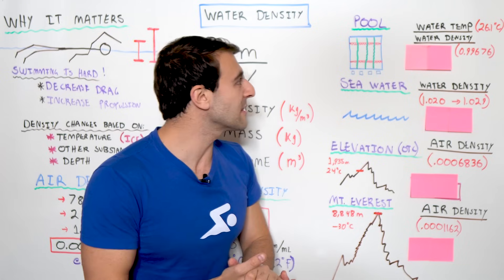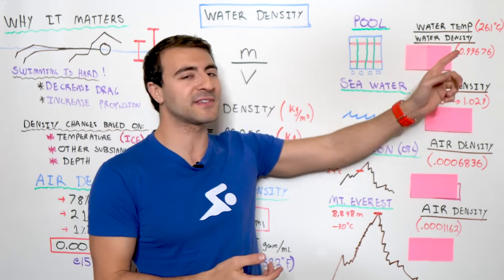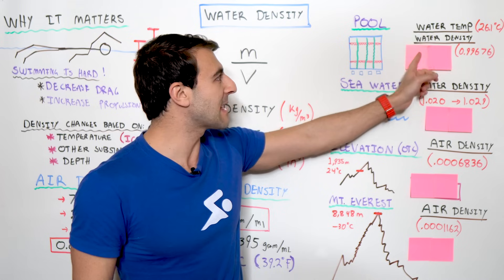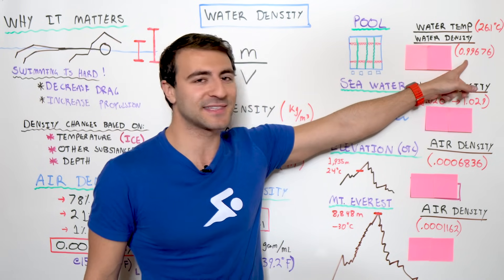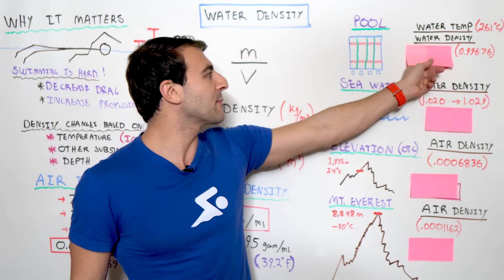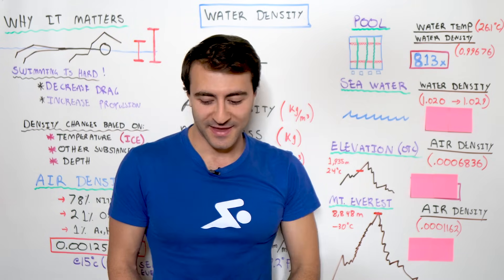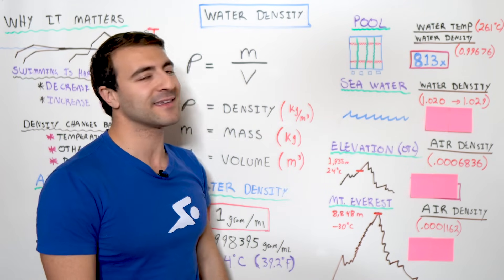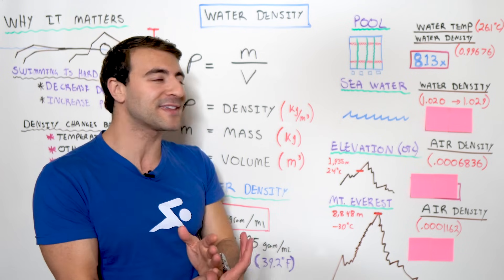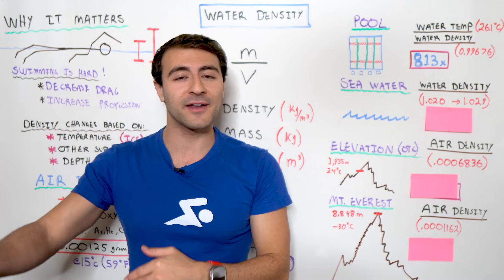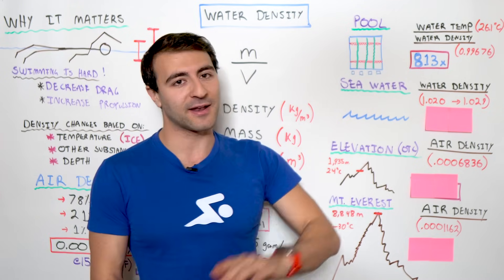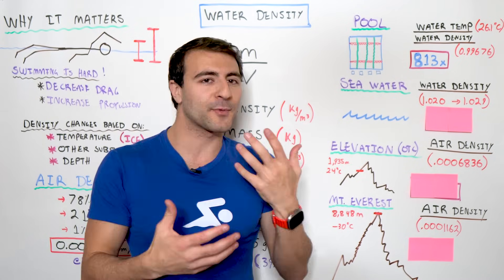So, let's go ahead and peel away and see just how much more dense water is than air at sea level in a pool that's 26 degrees Celsius. And this is the density of water. And the resulting math comes out to 813 times. So, water is 813 times more dense than air in the neutral environment. It's not quite 800, but it definitely is not 800.